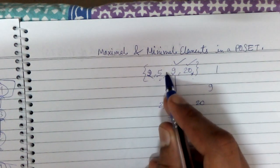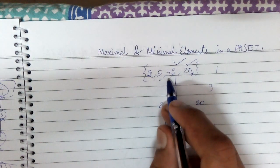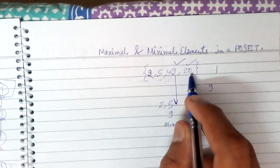Let's say there was one more element, 4. 4 is neither maximal nor minimal because 4 is greater than 2 but less than 20.